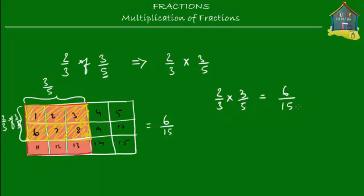After finding six upon fifteen, you must also check whether it can be simplified further. Six and fifteen are both divisible by three. Dividing six by three gives two, and dividing fifteen by three gives five. So the fraction six fifteenths can be simplified to two-fifths. Your final answer after simplification is two-fifths. If you're not sure how to simplify fractions, do watch my other video on GCF — greatest common factor.